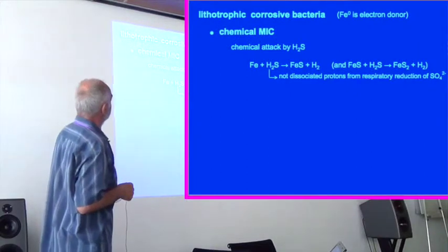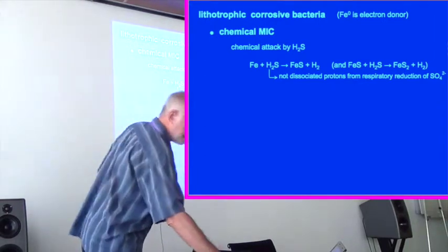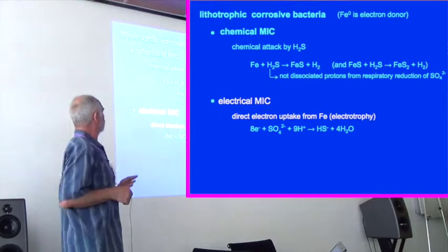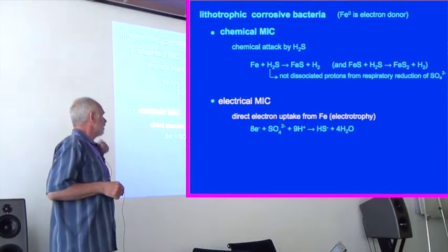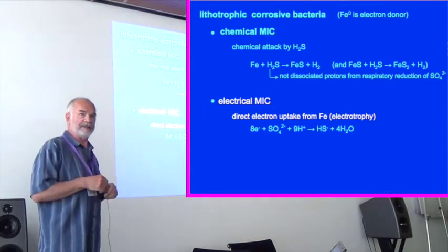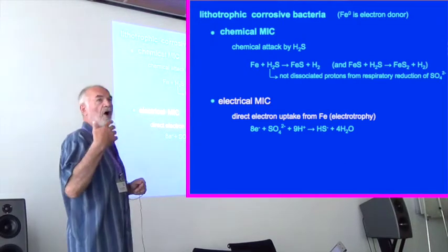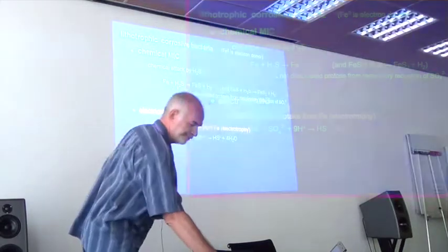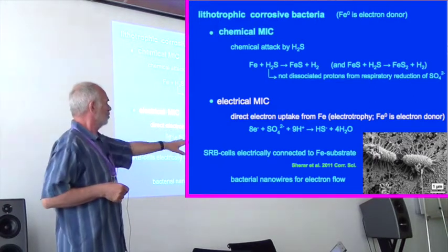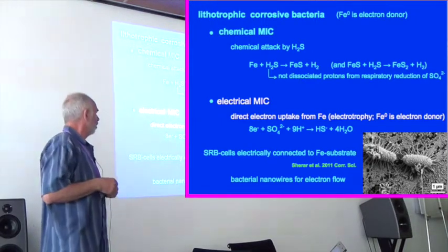When we are talking about lithotrophic corrosive bacteria, as usual, it's not only chemical MIC, but recently we now also from literature have electrical MIC. It means that you have a direct electron uptake from your substrate by your bacteria, and that's named electrotrophy. So as autotrophy, heterotrophy, electrotrophy. That's a scanned photograph from that paper, bacteria with nanowires for collection and consumption of electrons.